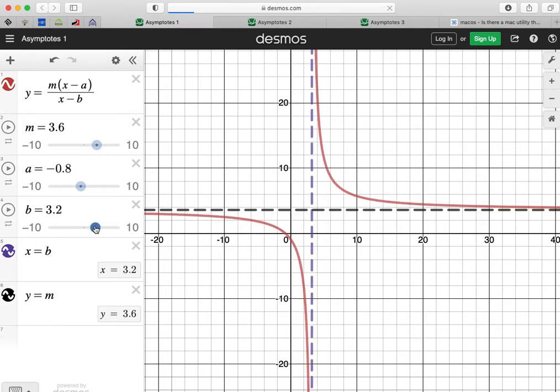So wherever the value of b is, in this case, let's make it 3. When b is 3, you'll notice that here, at the point 3, there is no value.